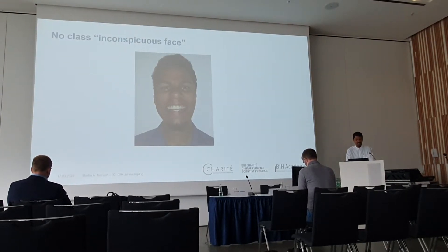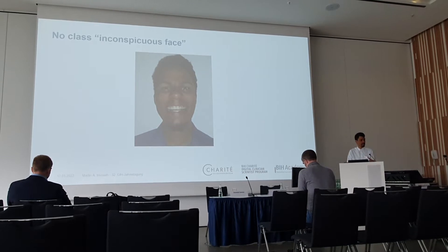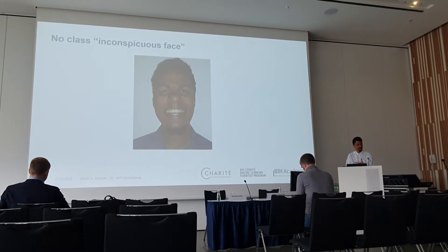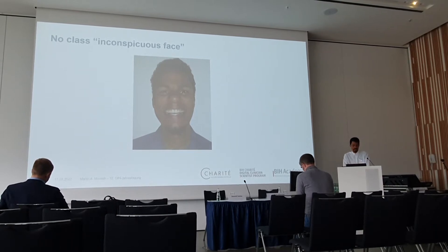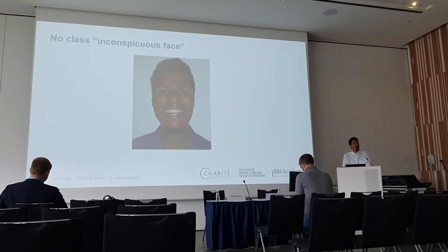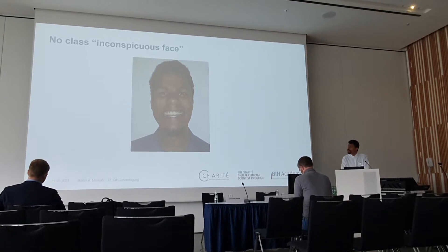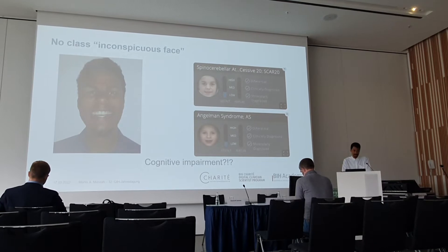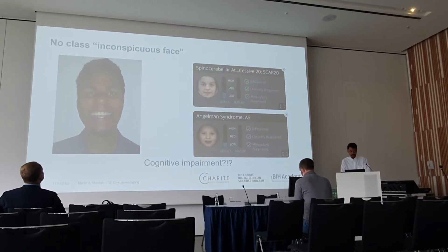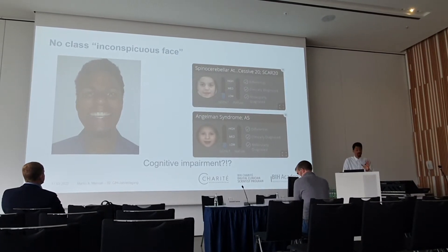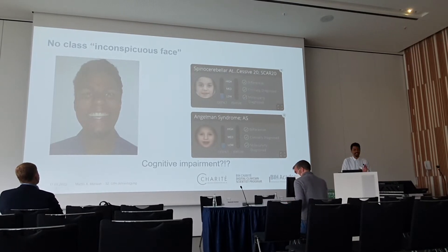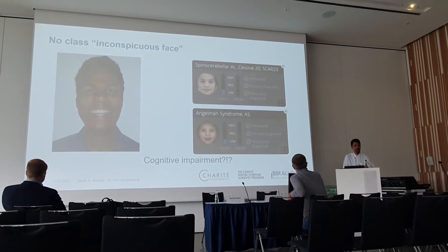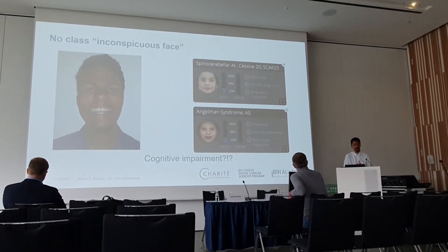As there is no class for inconspicuous faces in Deep Gestalt — that is, it is not trained to discern affected from non-affected individuals — you have to bear in mind when answering these questions that it will always return a score. For example, in my case, it suggests spinocerebellar ataxia and Angelman syndrome. Although my colleagues always tell me I am a bit clumsy, I do not think I have this disease. This is a shortcoming of Deep Gestalt: you have to use it with caution, because it cannot tell you that someone has nothing.